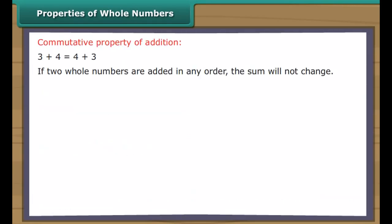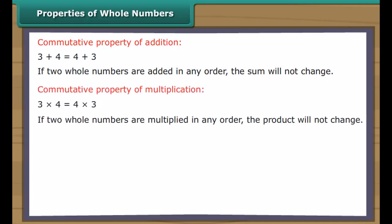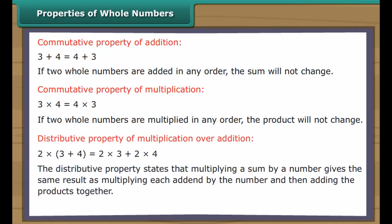If two whole numbers are added in any order, the sum will not change. If two whole numbers are multiplied in any order, the product will not change. The distributive property states that multiplying a sum by a number gives the same result as multiplying each addend by the number and then adding the products together. The above properties do not hold for subtraction and division.